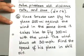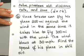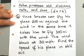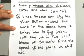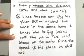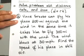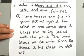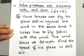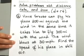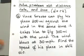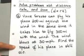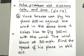The problem we are looking at says: Vince Grosso can fly his plane 200 miles against the wind in the same time it takes him to fly 300 miles with the wind. The wind blows at 30 miles per hour. We need to find the speed of his plane in still air.